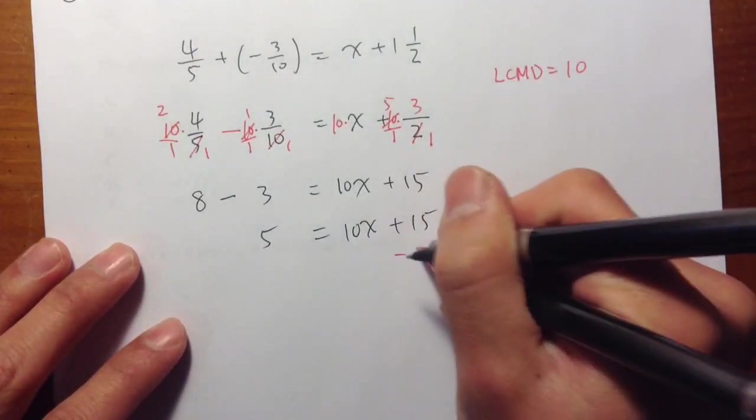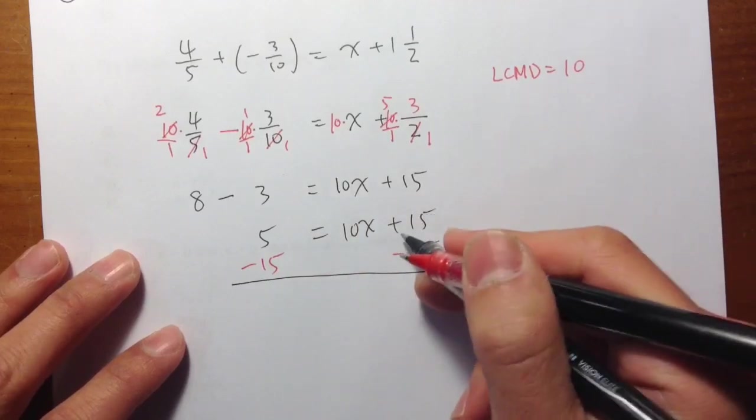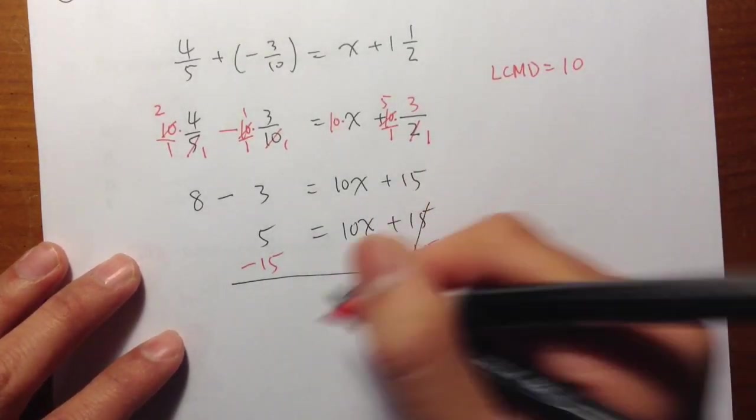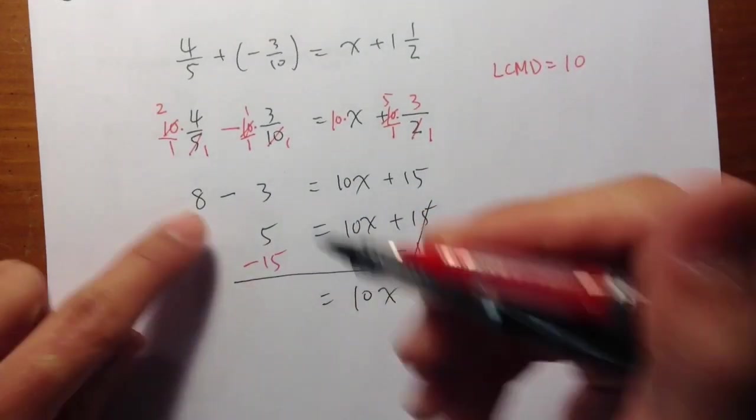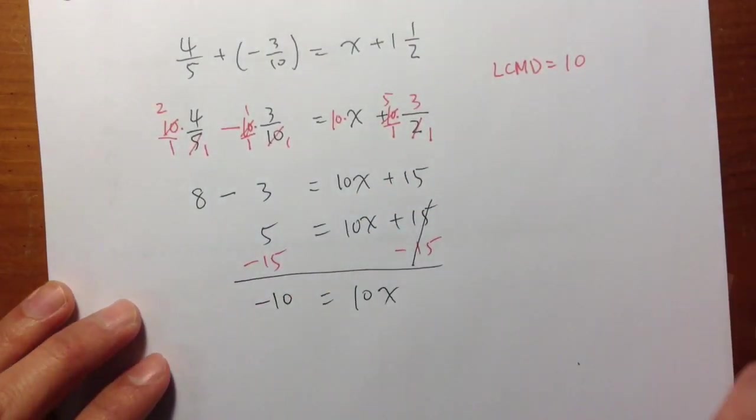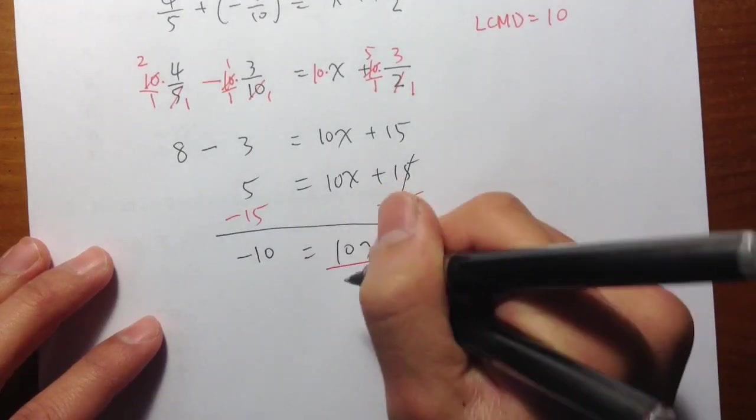So as usual, minus 15 on both sides. Because positive 15 minus 15 will be 0. Doing that, I will get 10x on the right-hand side. And then right here, 5 minus 15 is a negative 10. And then 10x is equal to negative 10. I need to divide both sides by 10.